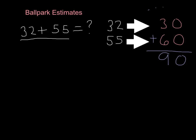And that is your ballpark estimate, 90. If you want the exact answer to see how close you were, then you would add 32 plus 55. 2 plus 5 is 7, and 3 plus 5 is 8.